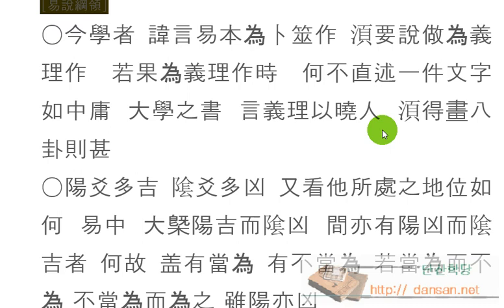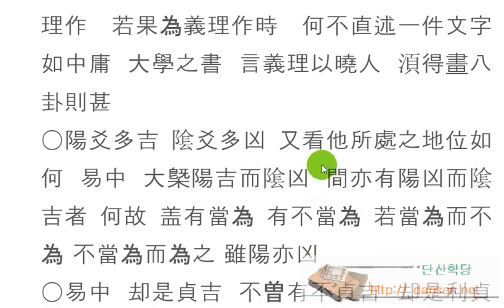양효다길하고, 이게 이제 주역부는 큰 원칙이에요. 음효다흉. 여덟 자에다가 써보세요. 양효는 길한 것이 많고 음효는 흉한 것이 많아, 주역책이 그렇다는 얘기에요. 우간타 소처지 지위 여하니, 그러면서 또 무엇을 봐야 되냐면 그가 처한 바의 지위가, 위치가 어떠한가를 봐야 돼.